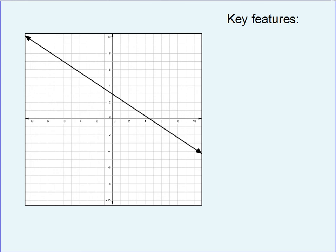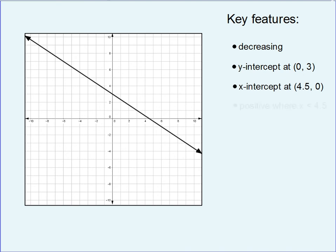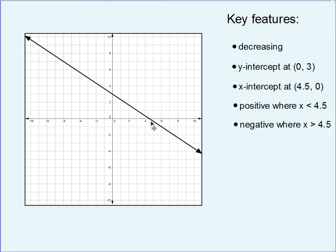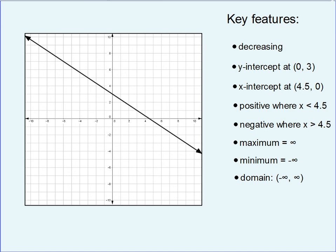Looking at this linear function in its entirety, we can tell that this function is decreasing. The y-intercept is at 3 and the x-intercept is at 4.5. This graph is positive, or above the x-axis, everywhere that x is less than 4.5, or from negative infinity to 4.5. This graph is negative everywhere that x is greater than 4.5, or from 4.5 to infinity. The maximum is at positive infinity and the minimum is at negative infinity. The overall domain goes from negative infinity to positive infinity.